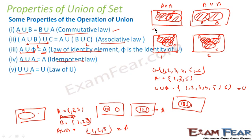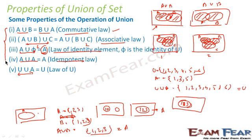To summarize the properties: commutative law — A union B equals B union A; associative law — A union (B union C) equals (A union B) union C; law of identity — A union ∅ equals A; A union A equals A; and the law of universal set — A union U equals U. Please remember these laws.